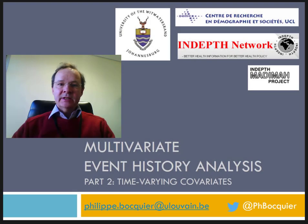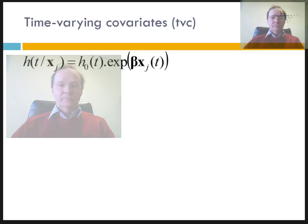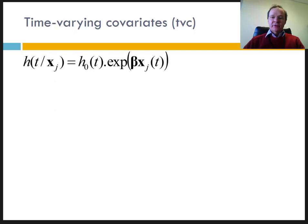This screencast is the second part of the course devoted to regression in event history analysis. The most commonly used explanatory variables are those that characterize the individual at birth, for example sex, ethnicity, caste, etc. It is assumed that the effect of these variables is constant through the life of the individual, and their effect is assumed to be proportional to the annual probability of knowing the event being studied, as explained in the previous screencast about the Cox model.